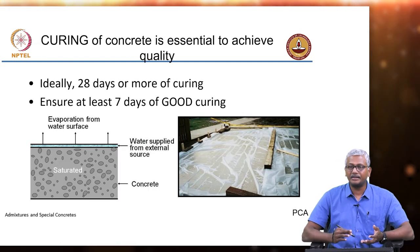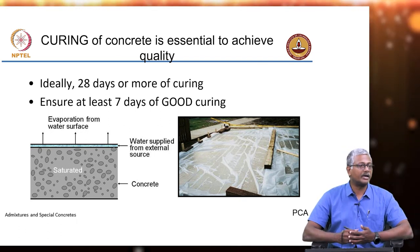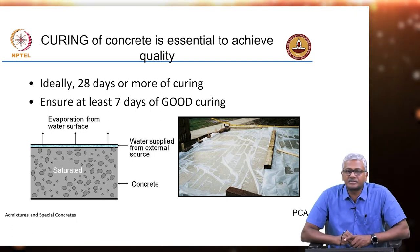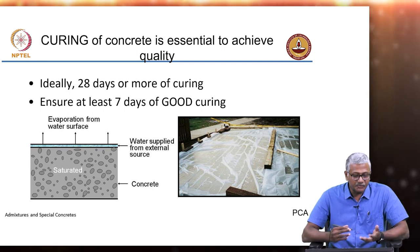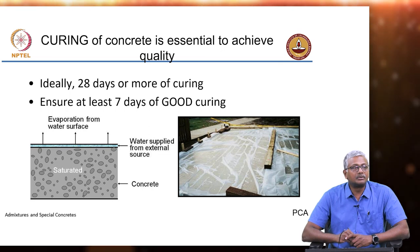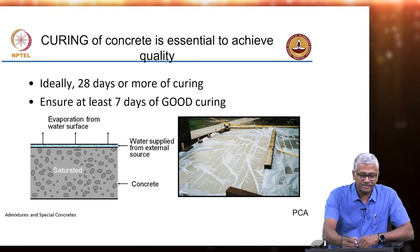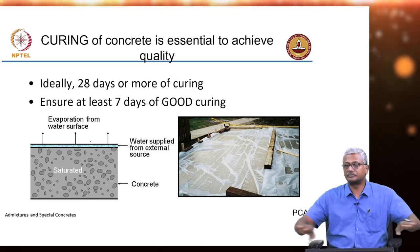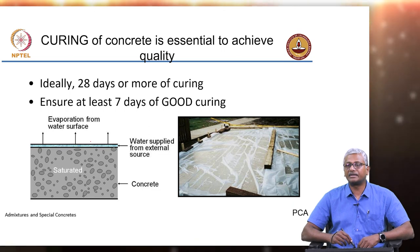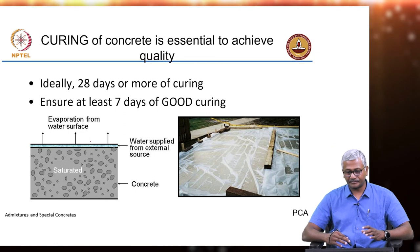Ideally, we want curing for as long as possible — 28 days or more. We do ideal curing for 28 days in the lab, but in the field it is simply not achievable, so at least we should ensure 7 days of good quality curing. Good curing for a slab implies ponding the top surface — having a water pond maintained on top of the slab — so that evaporation will happen only of that water and the water inside the concrete will not evaporate.